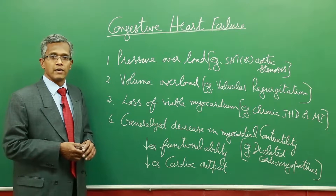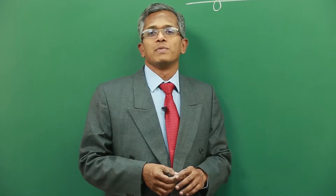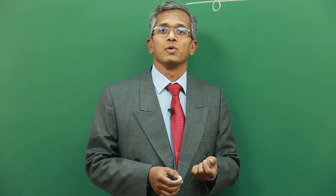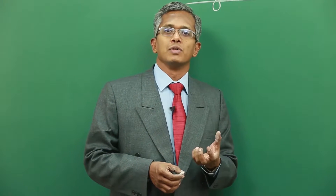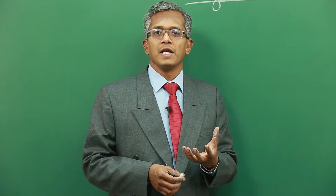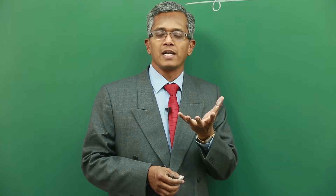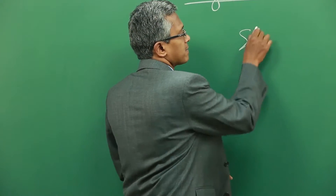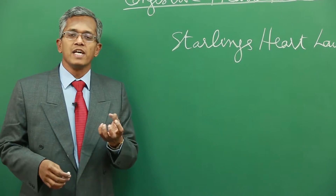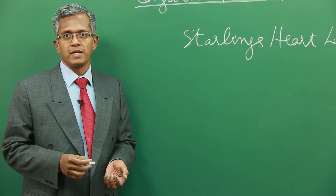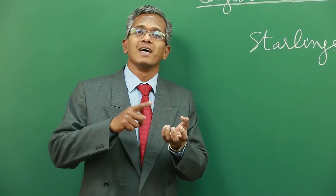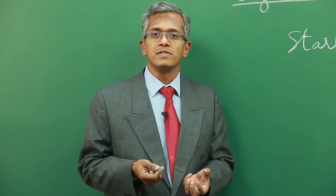Because of this, the functional ability of the heart is reduced and ultimately the cardiac output is reduced. As a compensatory mechanism, the heart tries to overcome this by dilating fully and coming back to full systole. According to Starling's heart law, the force of contraction of the heart is directly proportional to the myocardial fiber length. The problem in congestive heart failure is that the heart fails to contract fully, so cardiac output is reduced.